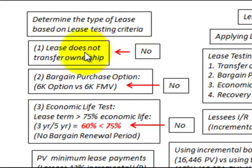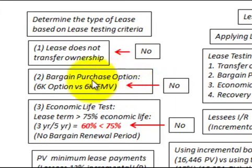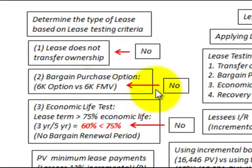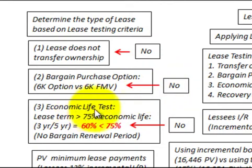First, for transfer of ownership: in this example, the lease does not transfer any ownership, so we fail that test. Second, for the bargain purchase option: there's a $6,000 option to buy the asset at the end of the lease, but the fair market value is also $6,000, so the lessee is unlikely to opt to buy it — there's no bargain. The bargain purchase option test also fails.